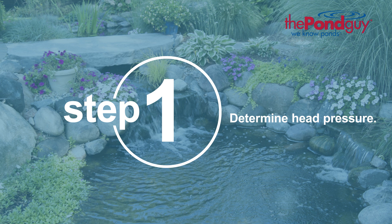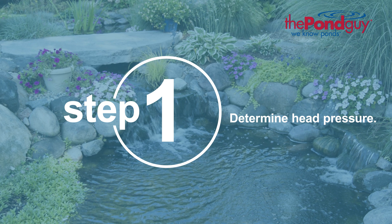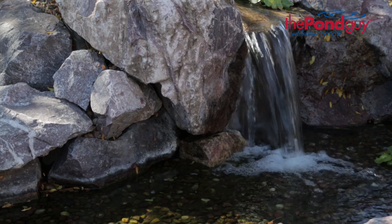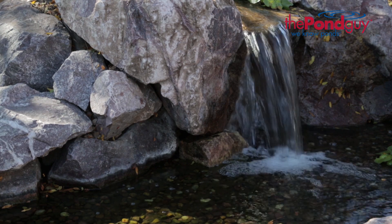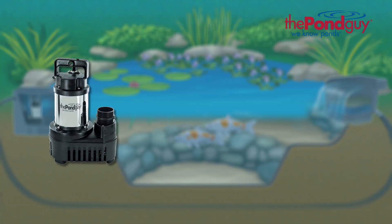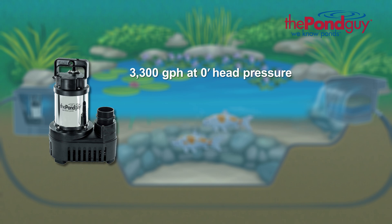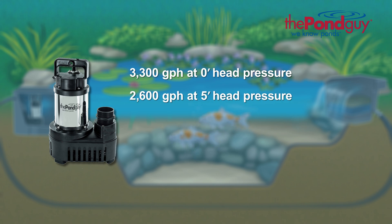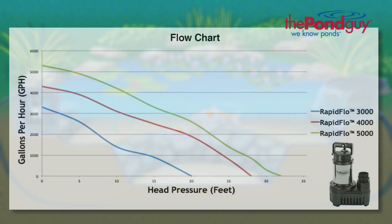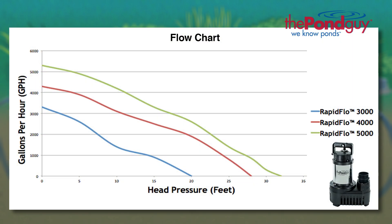Step 1: determine head pressure. When selecting a pump, head pressure is an important factor, as it has an overall effect on the amount of water that will flow from any given pump. For instance, let's say you find a unit that says it pumps 3,300 gallons per hour. As you add head pressure, the overall water flow of the pump is reduced because the pump has to work harder. This is why pumps have a pump flow chart like this one to illustrate the effects that head pressure has on a pump.